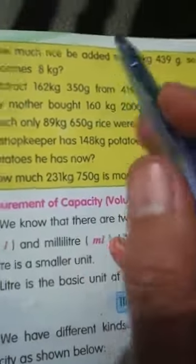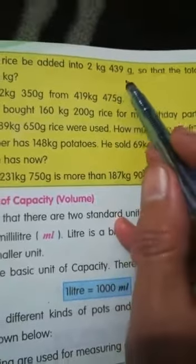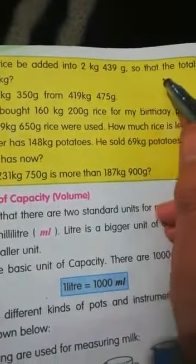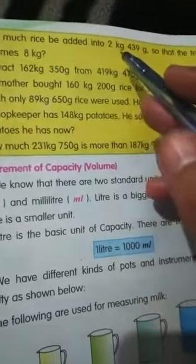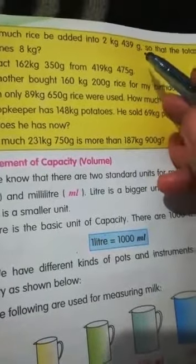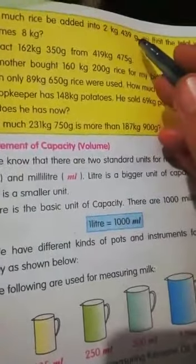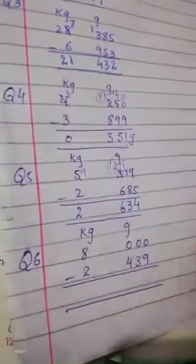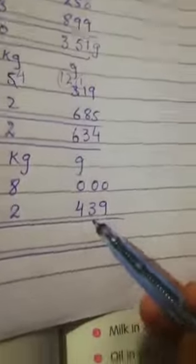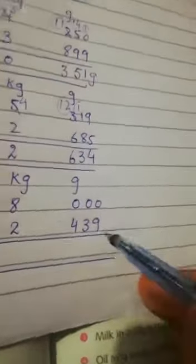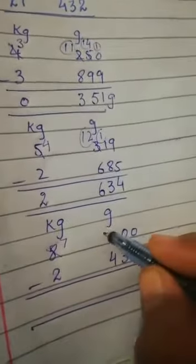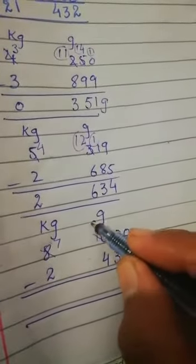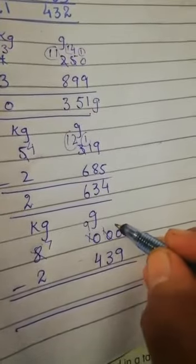How much rice be added into two kilogram four thirty nine gram so that the total weight becomes eight kilogram. Total weight eight kilogram hai. Two kilogram aur four thirty nine gram me hum kitna add karein. Eight kilogram minus two kilogram four thirty nine gram. Nine me se zero hum minus nahin kar sakte so humne ten me se one liya. Idhar nine raha gaya, ten bana.